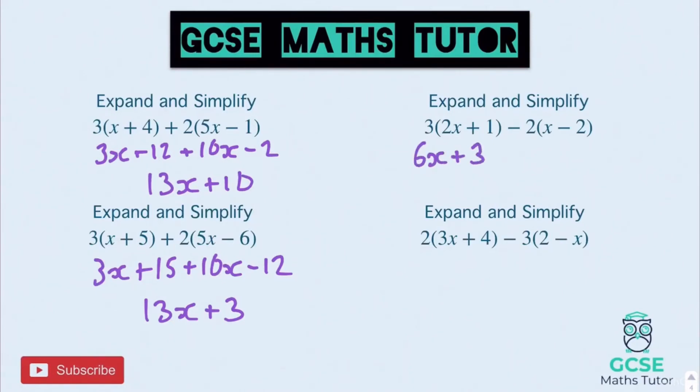And then we've got this negative going on. Minus 2 times x is minus 2x. And minus 2 times minus 2 is positive 4. So be careful with that one. Collecting the x's together, 6x take away 2x is 4x. And 3 plus 4 is 7. So 4x plus 7.